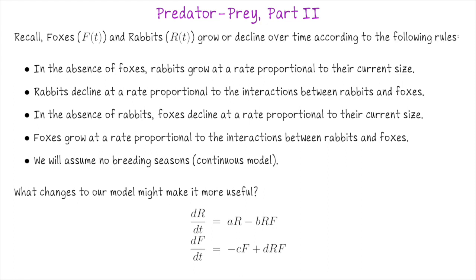Last time, we introduced the predator-prey equations, which we set up as modeling foxes eating rabbits in a closed ecosystem where they only change due to births, deaths, and the interactions they have with each other.